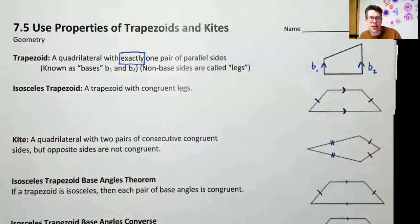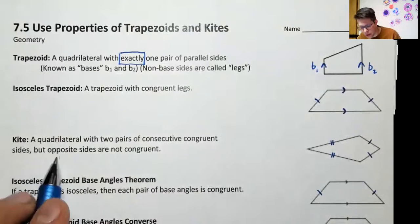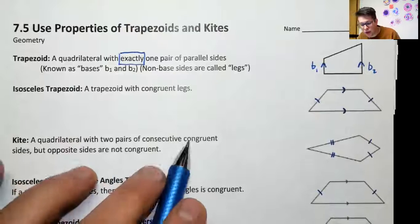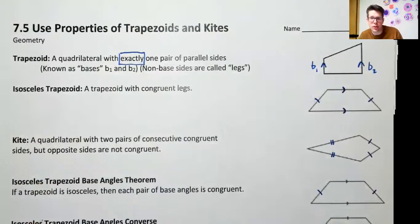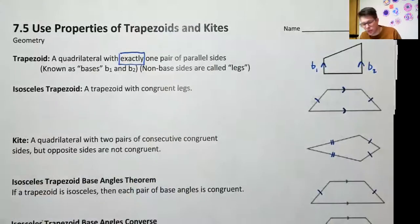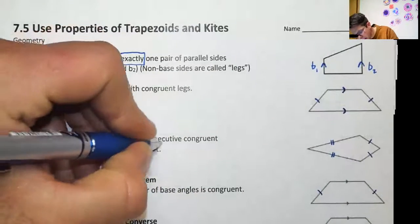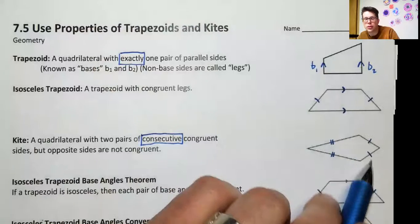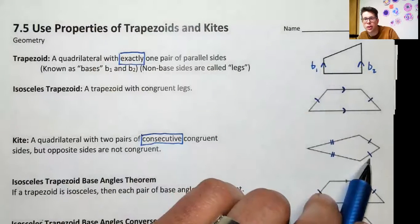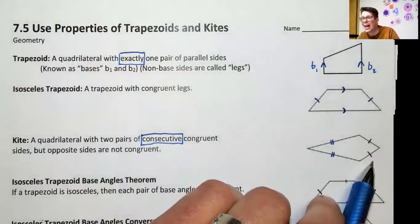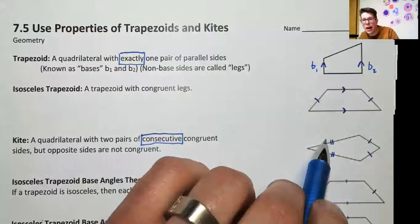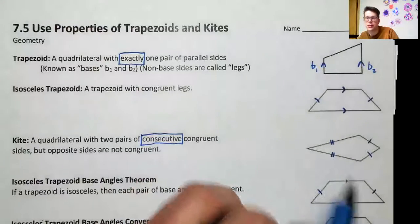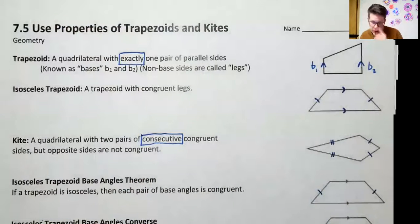Our second shape is the kite. A kite is another four-sided quadrilateral, and it has two pairs of congruent sides — but these are going to be consecutive congruent sides. In parallelograms we have two pairs of congruent sides as well, but those are opposite sides. In a kite, these two sides right here are congruent to each other and they're right next to each other — consecutive, not opposite.